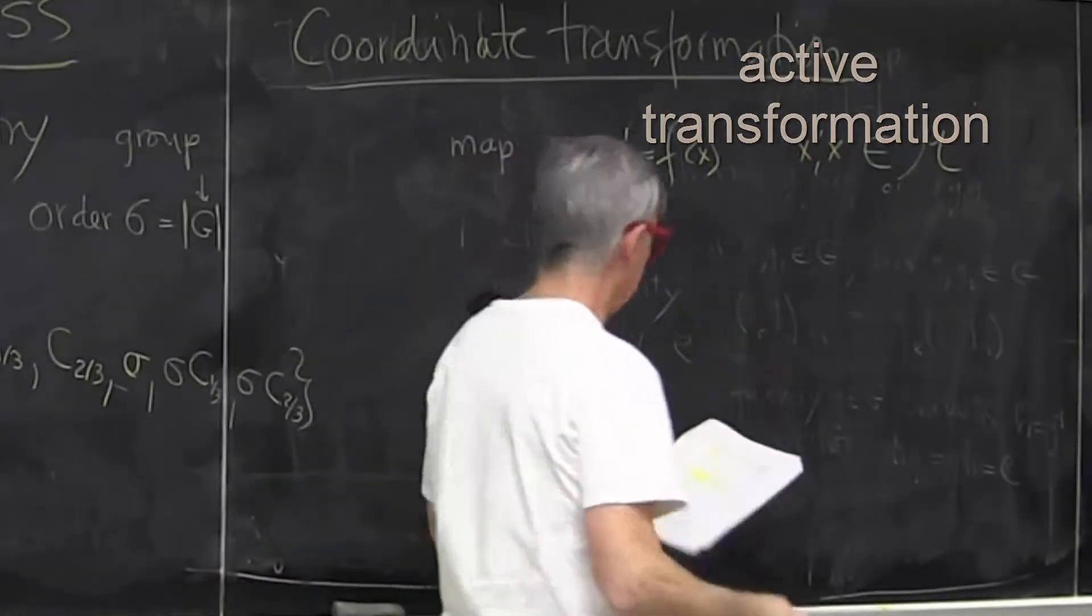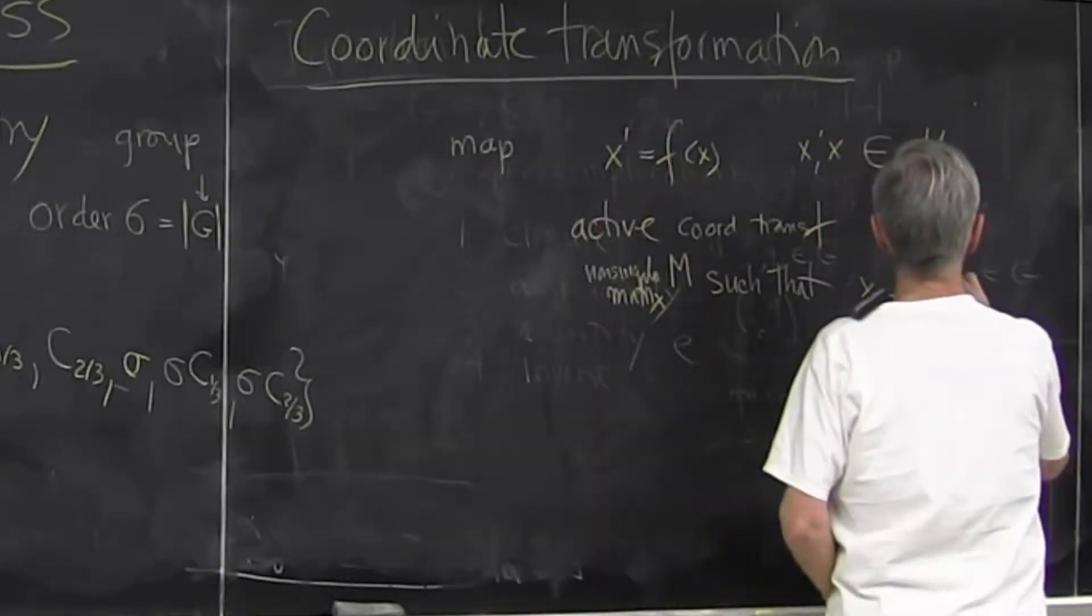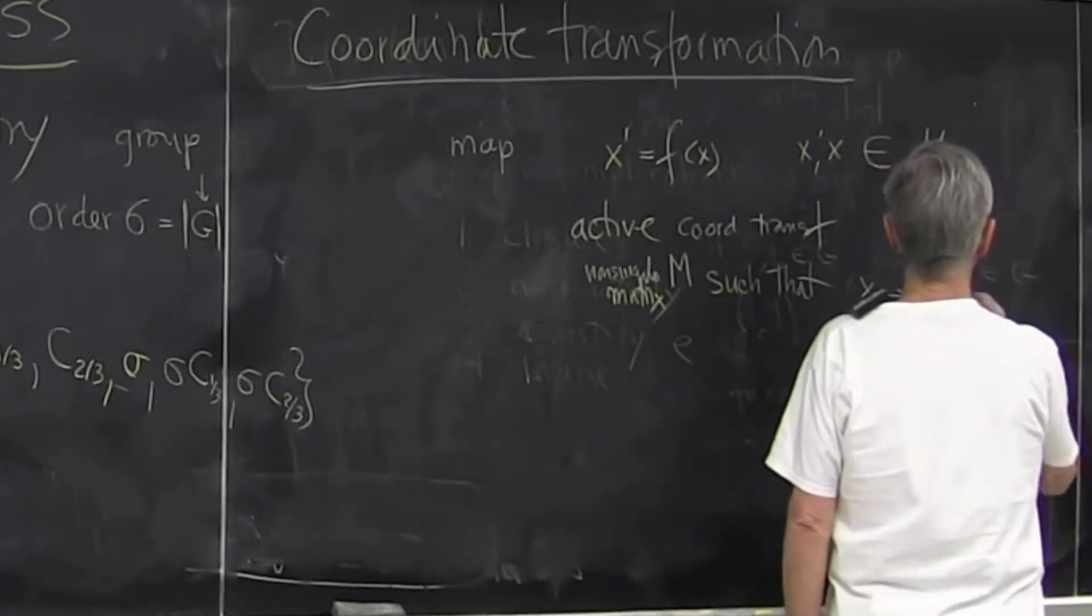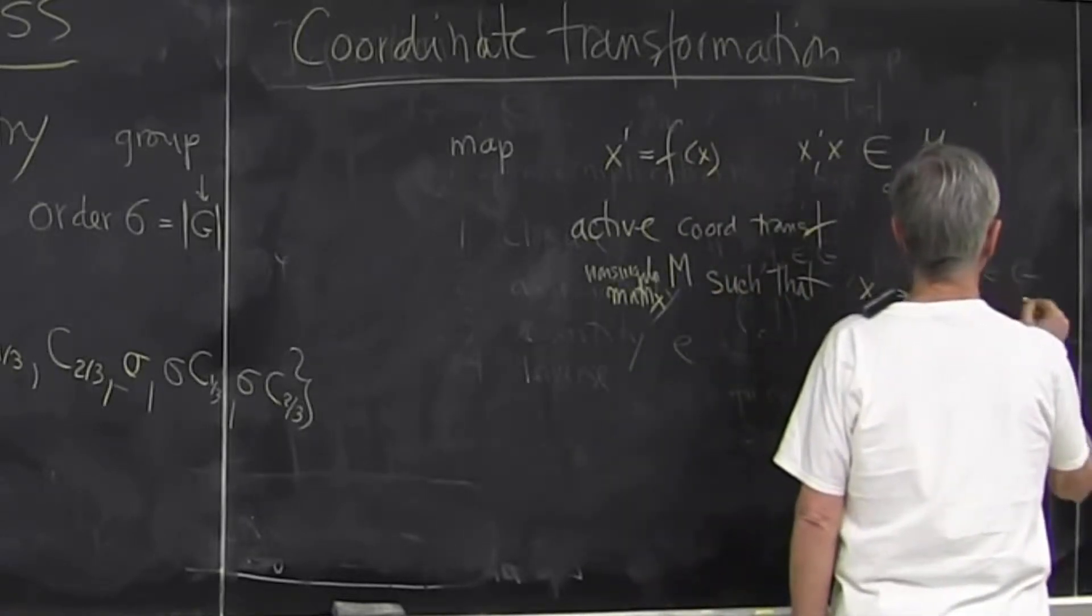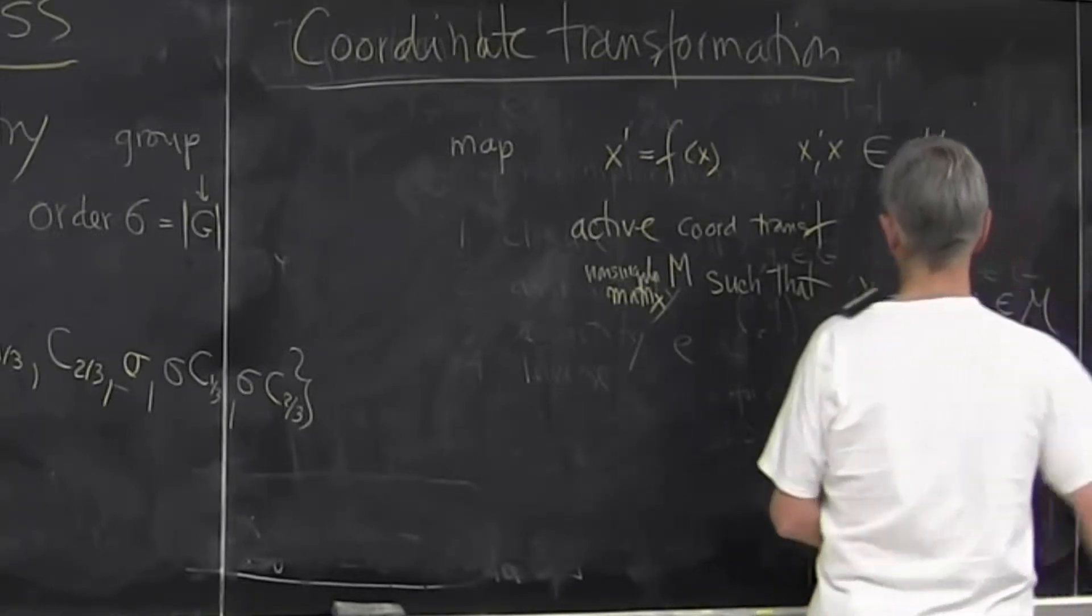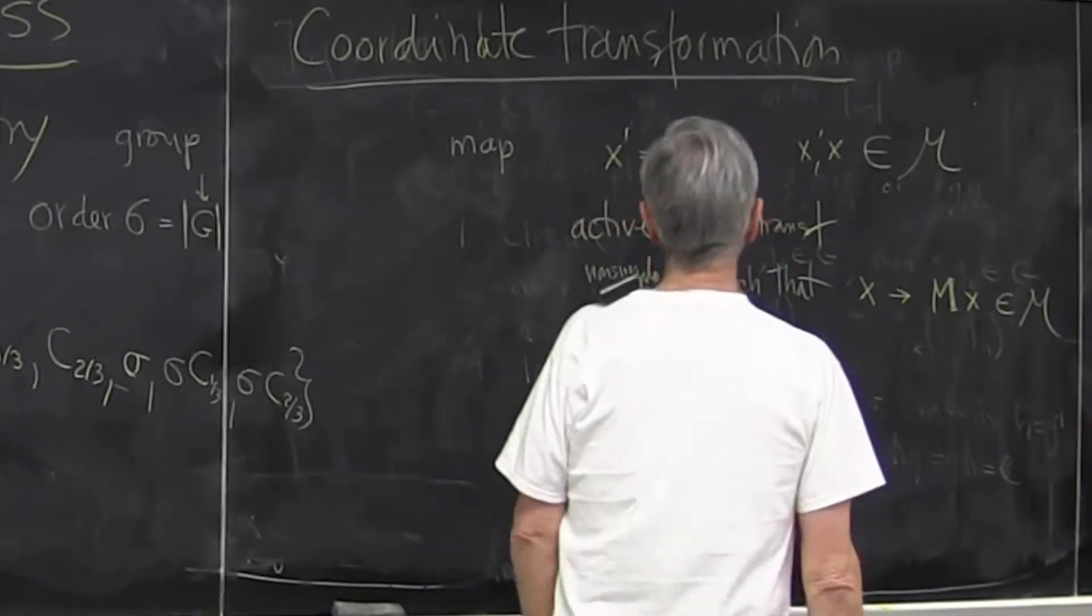Unique by definition of the map. A linear transformation we can always represent by a matrix. So if there is a matrix such that x is mapped into M of x, another point, that's called an active transformation.